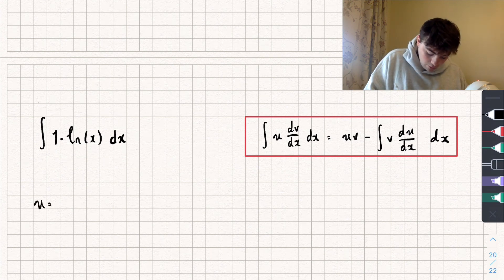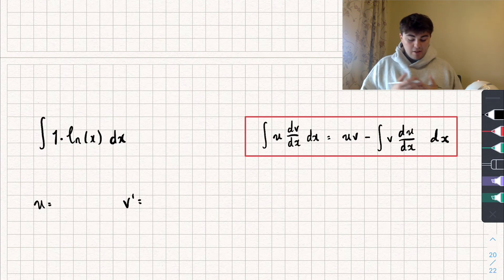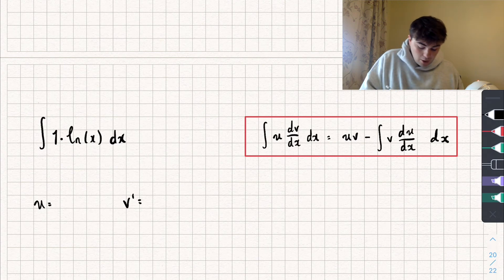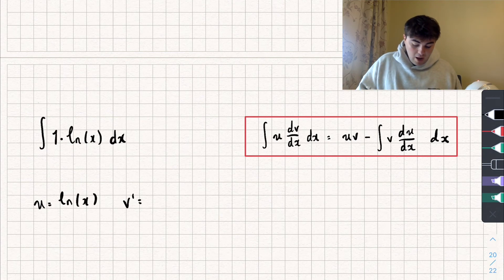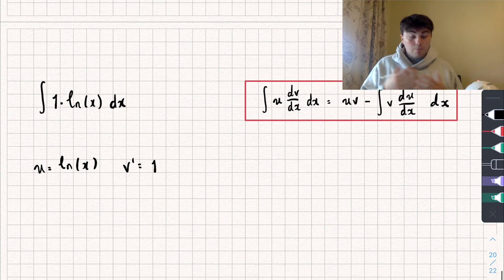If I write u and my derivative of v, we're going to have to integrate whatever the derivative of v is. So obviously I can't set that equal to the natural log of x because that's the whole point of this video — we don't know how to calculate the integral of the natural log of x. Which means I'm going to set u equal to the natural log of x because I can differentiate that; that just goes to 1 over x. And the integral of 1 is just x, so that's pretty easy to do. So that's my u and my v dash.